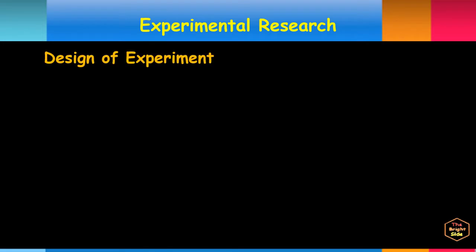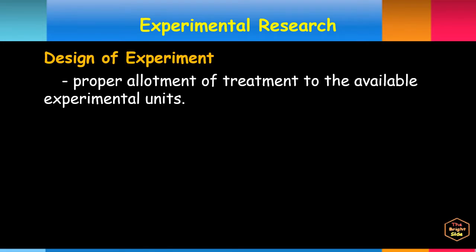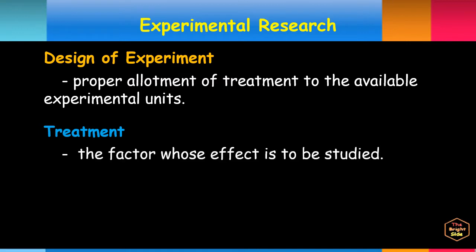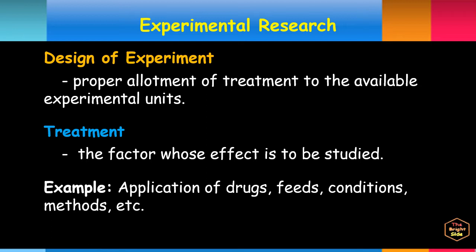The design of experiment involves proper allotment of treatment to the available experimental units. The treatment is the factor whose effect is to be studied. Examples are application of drugs, feeds, conditions, methods, etc.